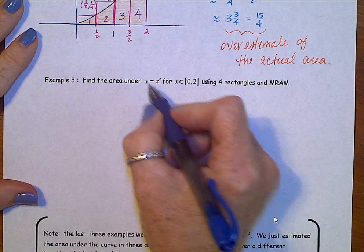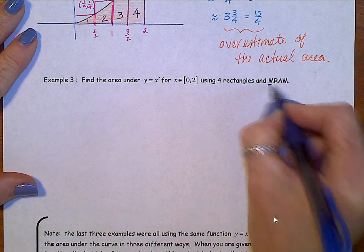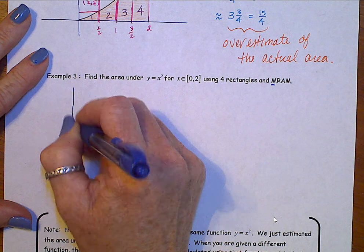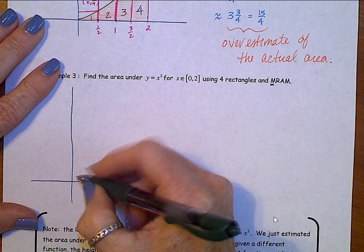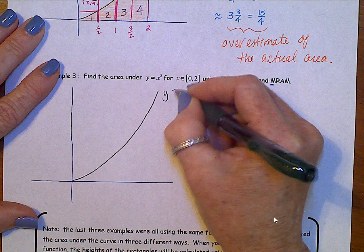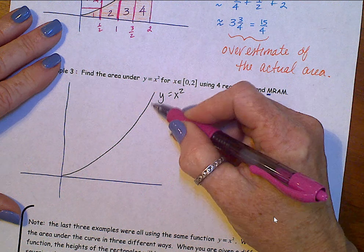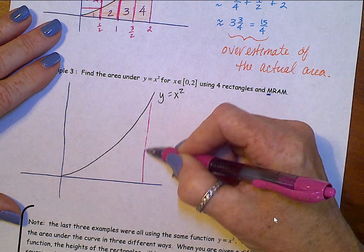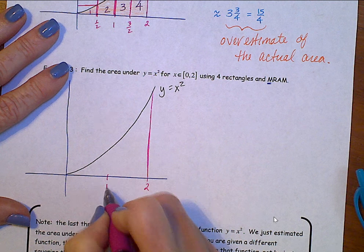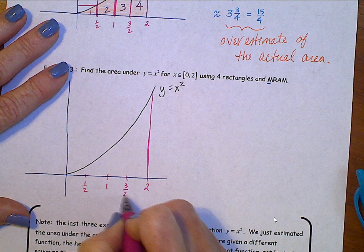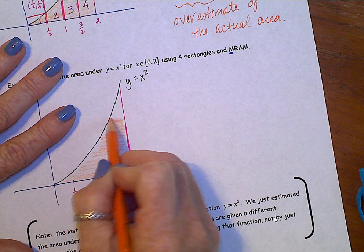So, same function, y equals x squared, for x between 0 and 2, same domain, same four rectangles, but this time, MRAM. So, let's sketch a graph. y equals x squared. This time, I'm going to make it just a tad bigger, to spread things out. Not much more, but a little bit. Here's two, one, one half, three halves. This area.